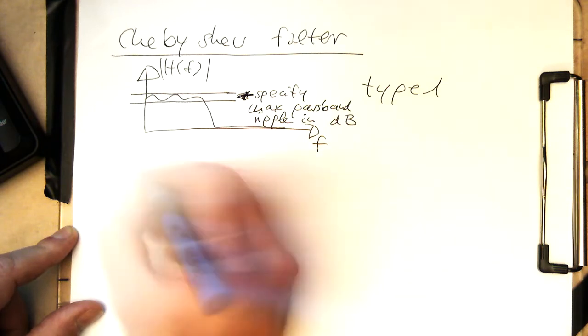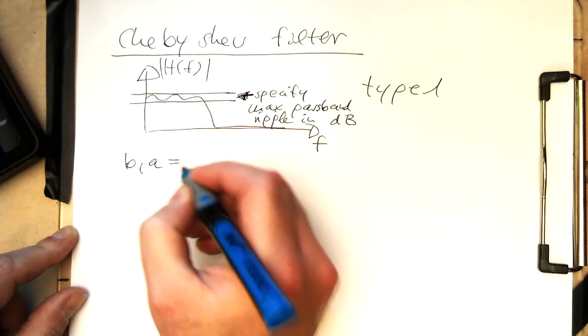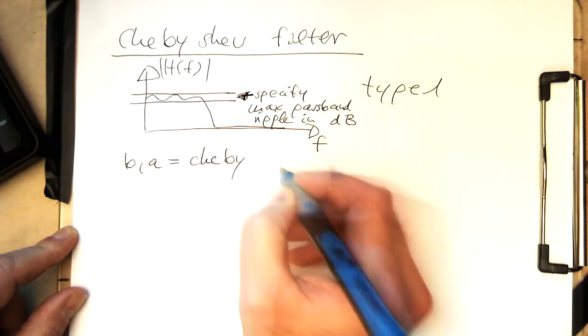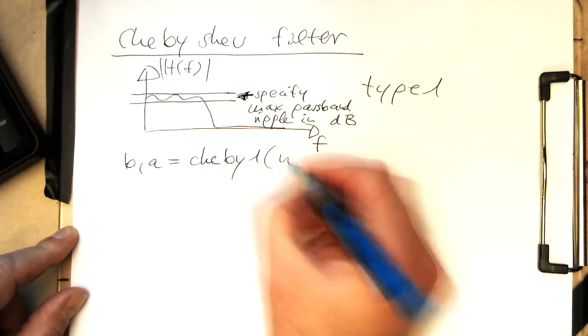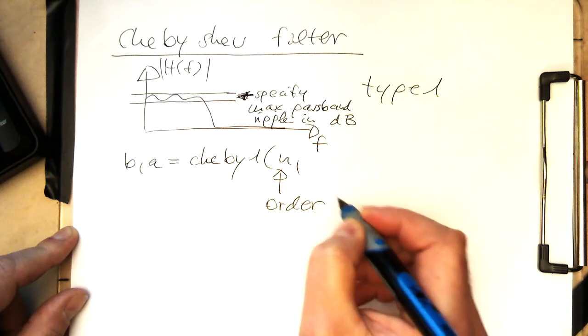So with that, we can, that's just a standard way of doing this, B, A, Chebyshev 1. And then again, N is the order, the filter order,